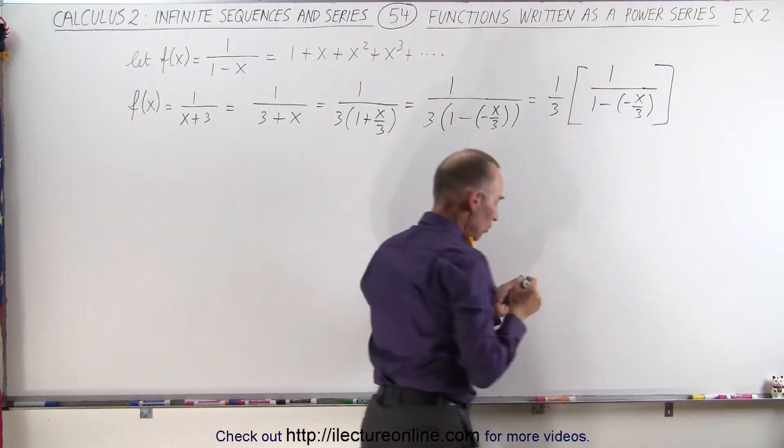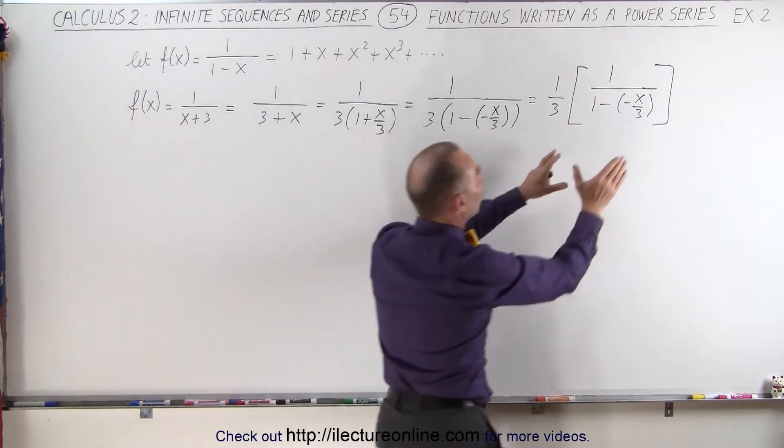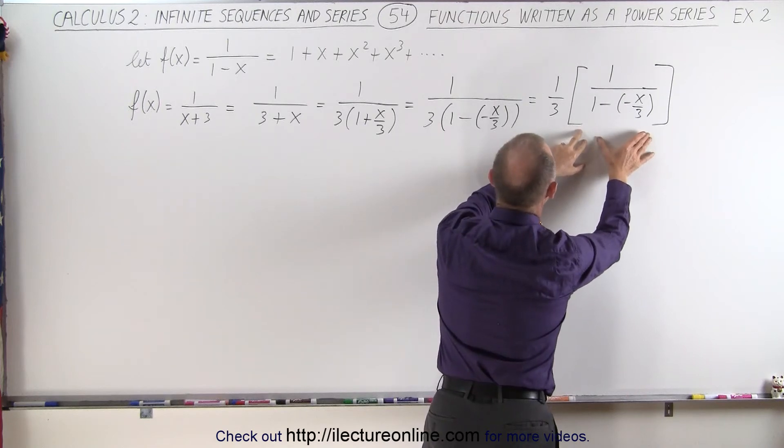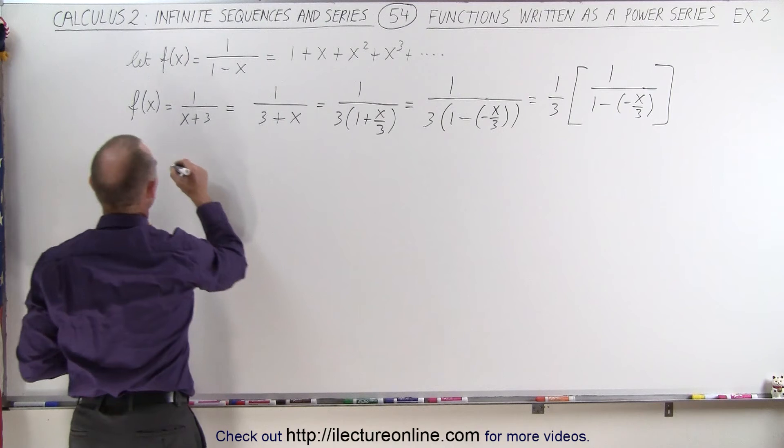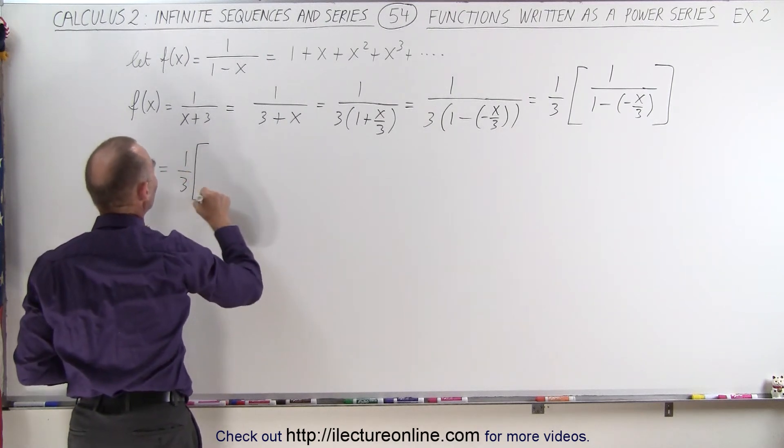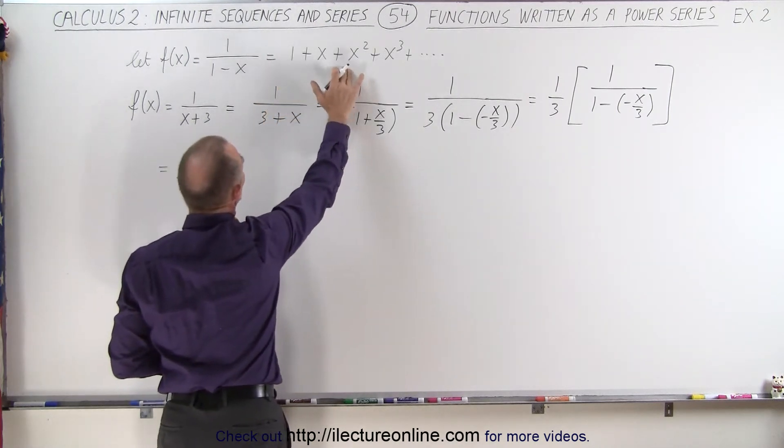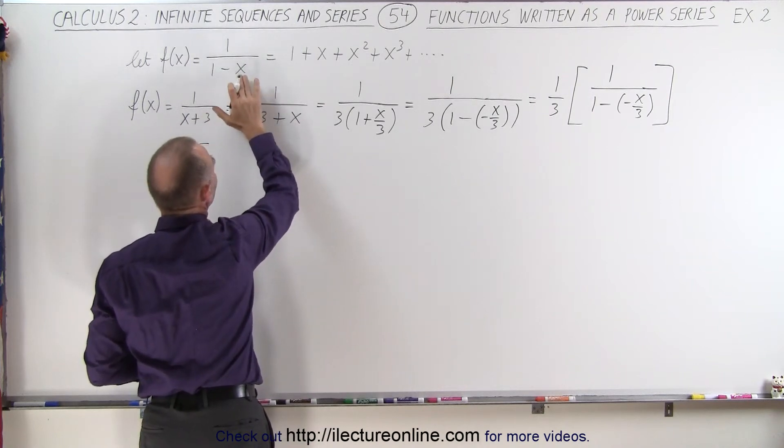And first what we're going to do is we're going to write this portion right here like an infinite series, and then multiply it times 1 over 3. So this is equal to 1 over 3 times, we have the very same infinite series as we have over here, but instead of an x,